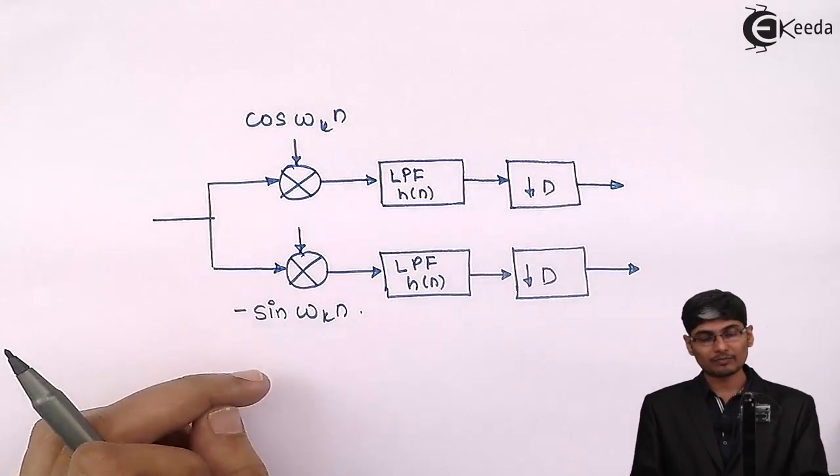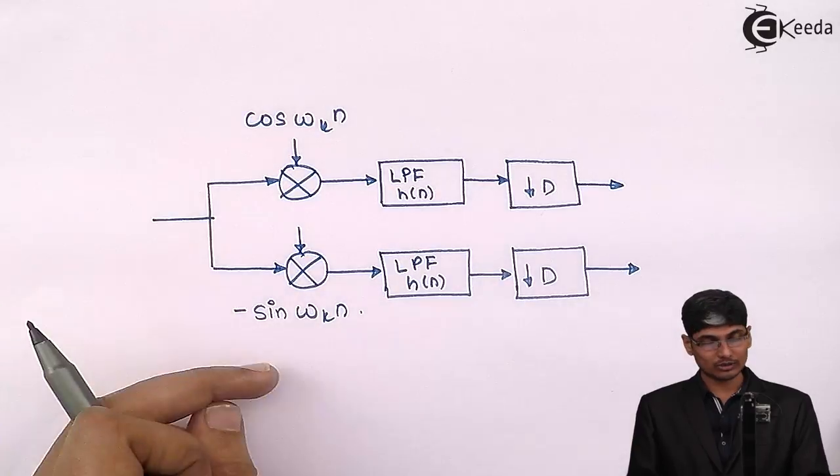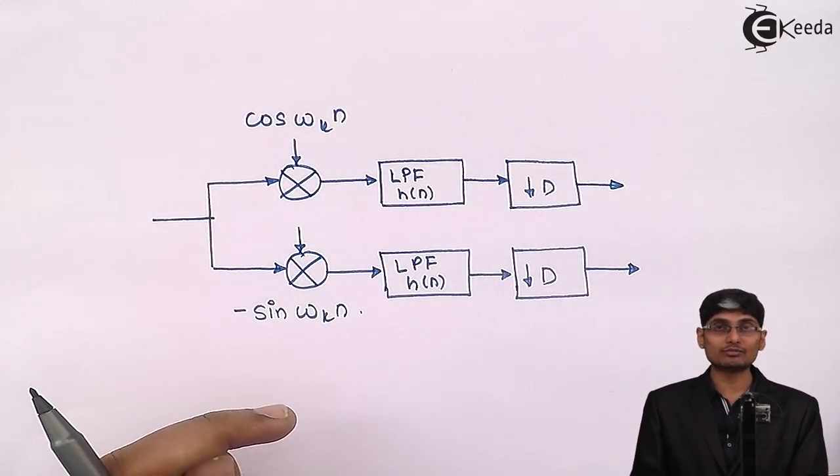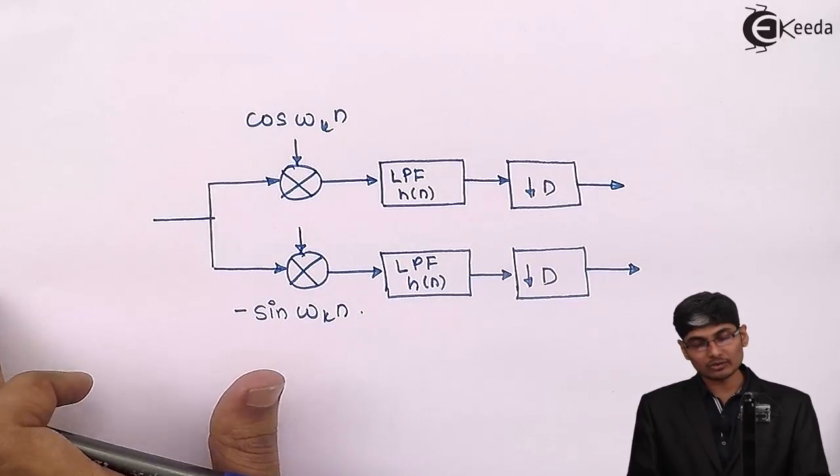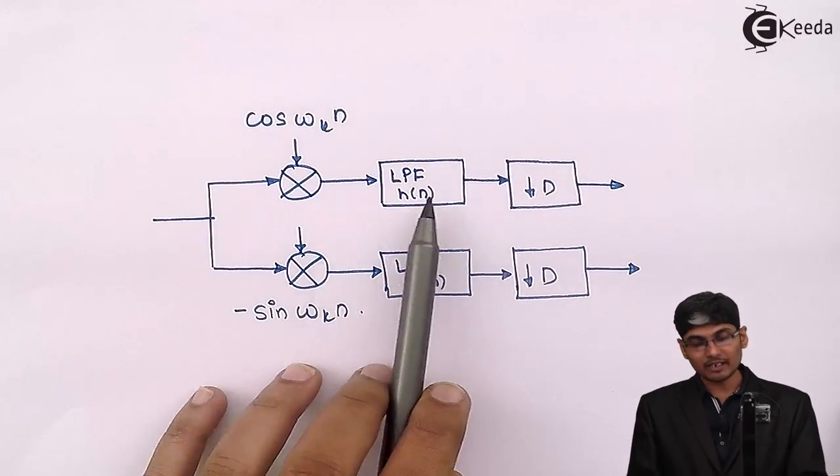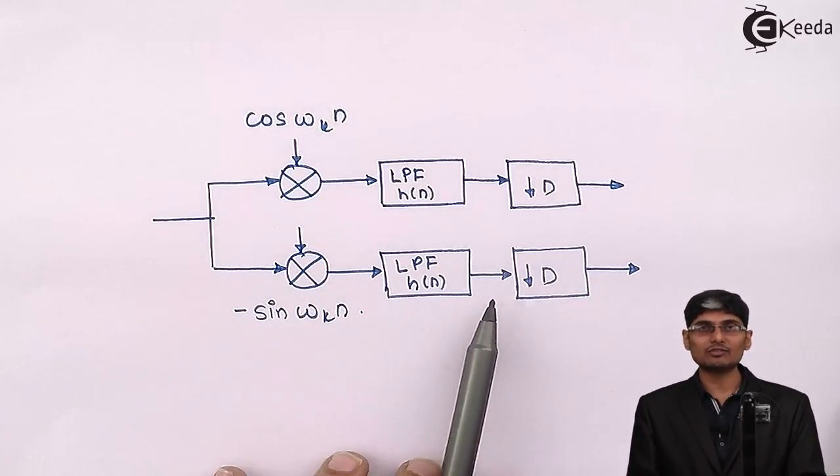These are mutually orthogonal to each other. So we are using an orthogonal frequency division multiplexing and then they are passed through a low pass filter.